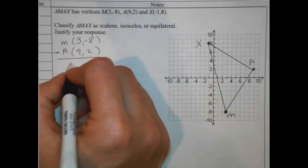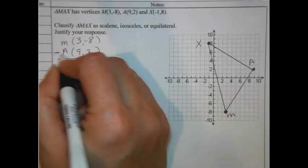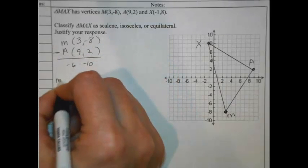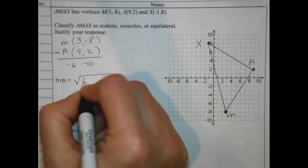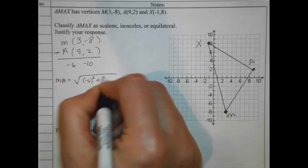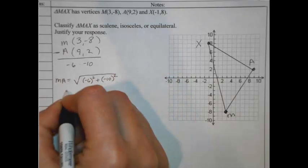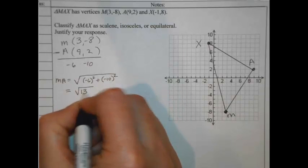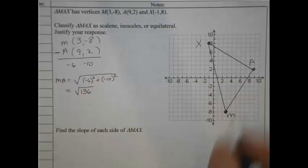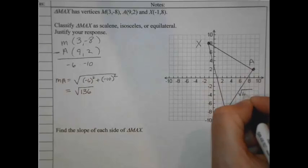So 3 minus 9, that's -6. And -8 minus 2 is -10. So our distance from M to A would come out with our Pythagorean Theorem, or distance formula: -6 squared plus -10 squared, all under that square root. That looks like a 36 and a 100. So this is going to be root 136. Let me put that in my picture. That's square root of 136.